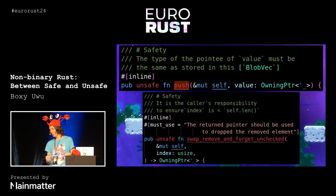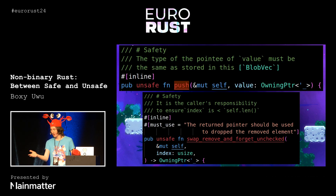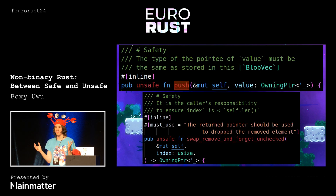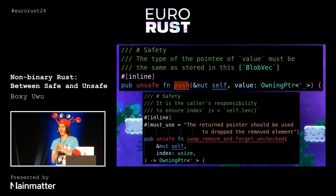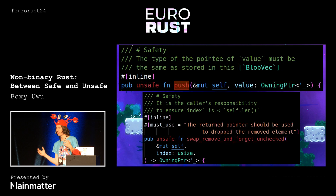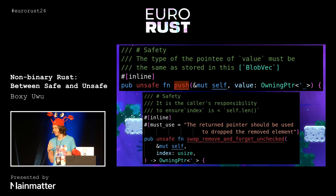Having these types makes things a lot better. We actually have a nice push method now that looks like what you might expect. The safety invariants for it are what you would expect — because we're taking a raw pointer and don't know what the data is, we have to make sure that when we put data in the vec it's of the right type, and that's the only safety invariant in play.